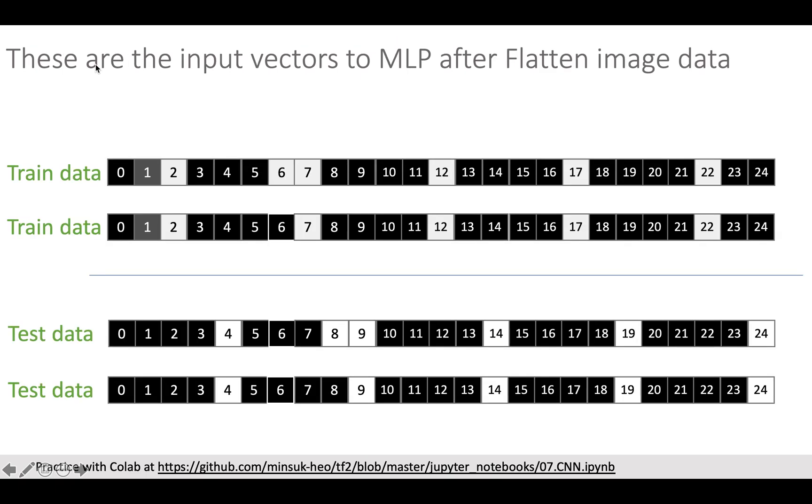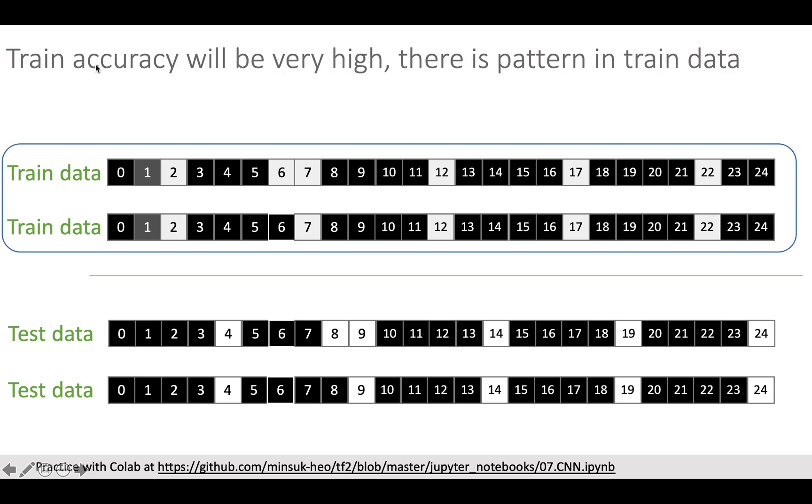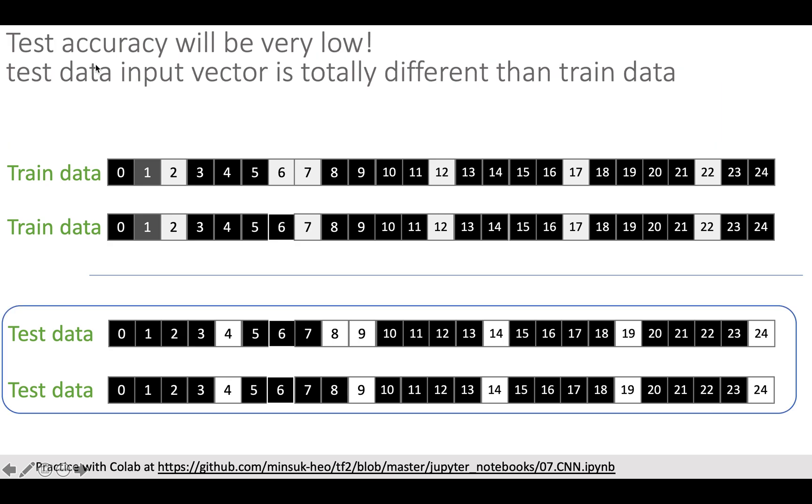In this example we have 25 features going into the neural network. Here are the flattened images from the previous digit one example. I think train accuracy will be high since the train data has pattern—if 2, 7, 12, 17, 22 are white color, the digit is supposed to be one. But I think the test accuracy will be very low since test data pattern is totally different. 2, 7, 12, 17, and 22 are black in the test data.